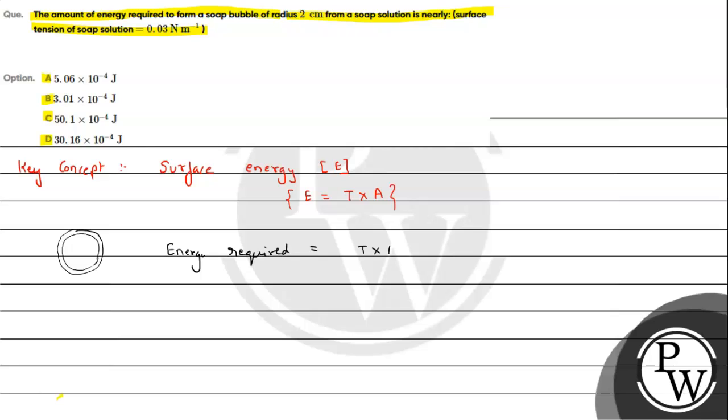Energy required will be, for one surface it will be T × A, but we multiply it by 2. So surface tension is given as 0.03 into A, that is area of the bubble, which will be 4πr² since it is of spherical shape. So 2 × 0.03 × 4π × r².